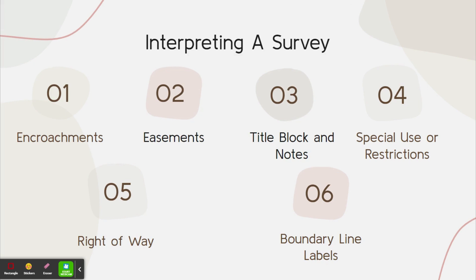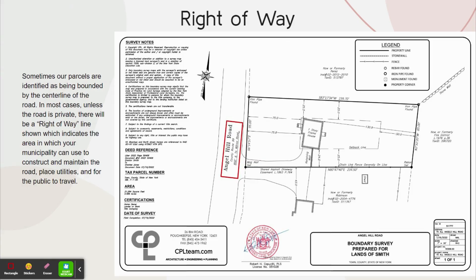Next is the right of way. Sometimes our parcels are identified as being bounded by the center line of a road. In most cases, unless the road is private, there will be a right of way line shown which indicates the area in which your municipality can use to construct and maintain the road, place utilities, and for the public to travel. Here you'll see on a road line that it's indicated as a county route. It could also be a state route or a local highway, which indicates who maintains the road. There also may be a specific width of the road indicated on your map.